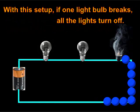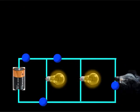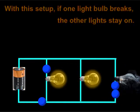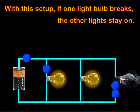With this setup, if one light bulb breaks, all the lights turn off. With this other setup, if one light bulb breaks, the other lights stay on.